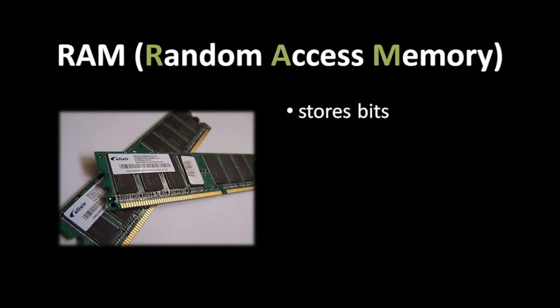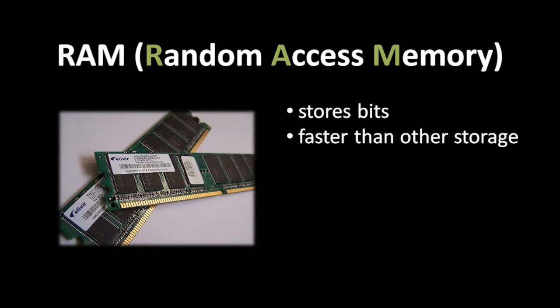Earlier I mentioned RAM — random access memory. RAM chips are pieces of circuitry for storing data, for storing bits. But RAM differs from other kinds of storage. First off, RAM is much, much faster — far faster than, say, your hard drive. Typically faster by a factor of more than 100. So when it comes to just speed, RAM is a far superior kind of storage.